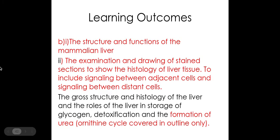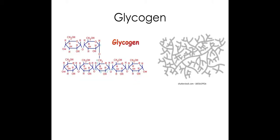We're going to move on to look at glycogen and detoxification. The storage of glycogen — you should know this from biological molecules. Glycogen is formed from alpha glucose; it has alpha 1-4 and alpha 1-6 glycosidic bonds, forming a branched molecule ideal for storage of glucose because it's insoluble and doesn't affect osmosis. Glycogen is stored within the hepatocytes within the liver. If you need to, go back to biological molecules and revise that.